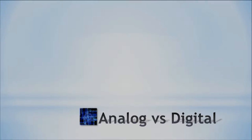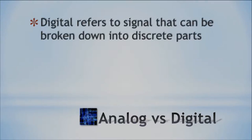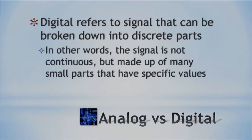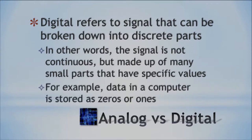Let's contrast that with digital. Digital means that the signal can be broken down into discrete parts — specific parts. It's not continuous. You've got these different small parts that have a certain value set to them. The data in a computer is either a zero or a one, and that is it.